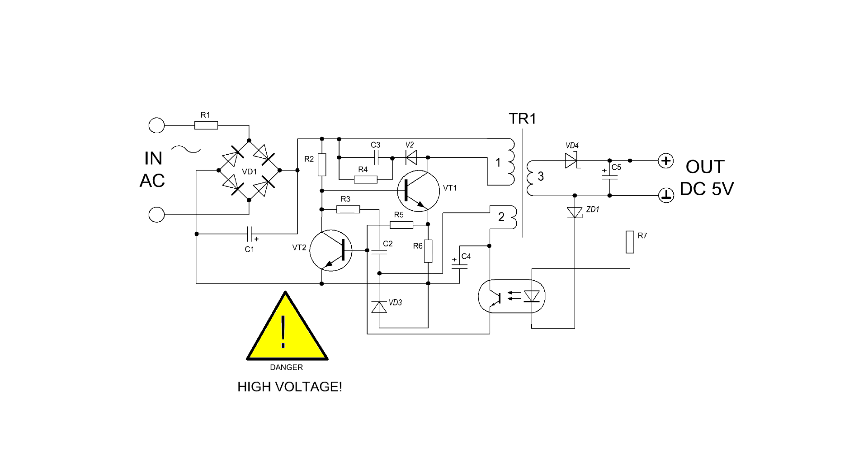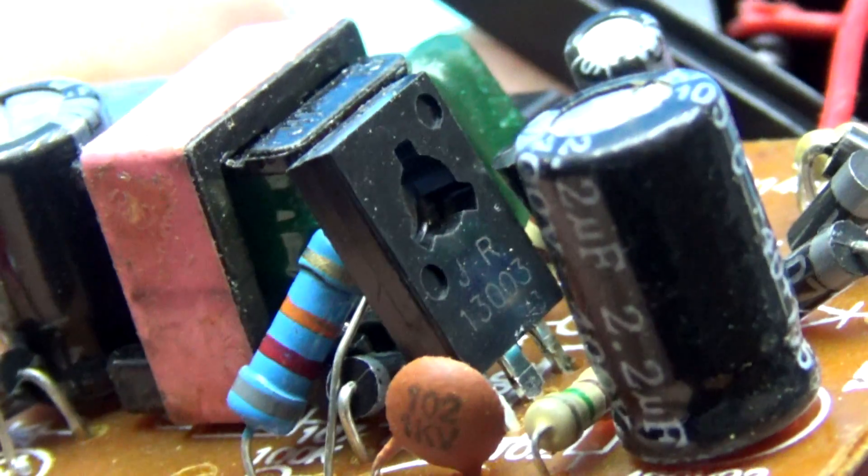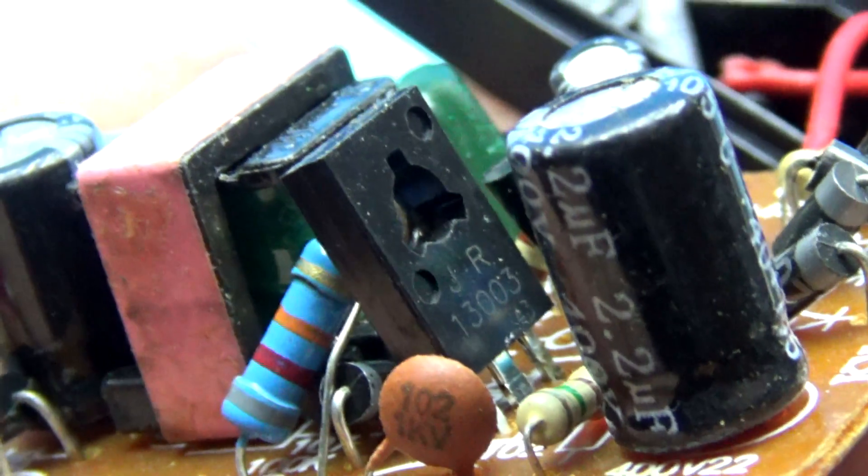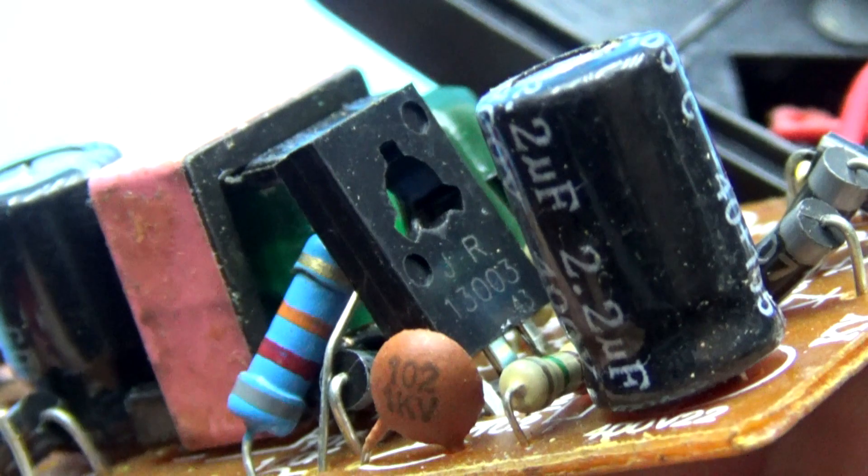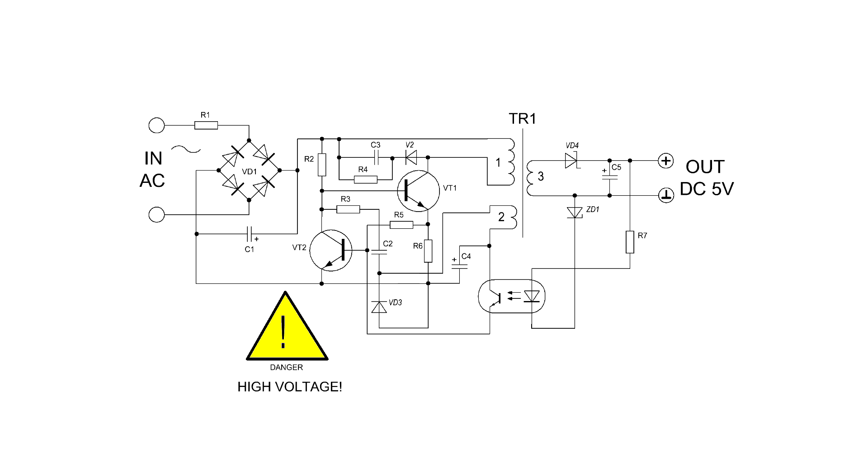It was built on a fairly popular topology. It is an auto-generator switching power supply with current protection and stabilization of the output voltage. The unit is built on just one transistor. Usually, this is a high-voltage bipolar transistor from the MJE series. In my case, MJE13003 is installed. This is pretty good. Sometimes they put a transistor of much lower power. There is another transistor in the circuit. A protection system is built on it. But I will say more about it later.